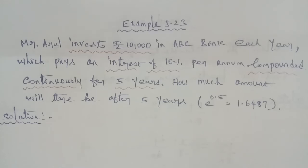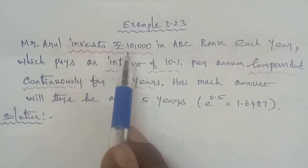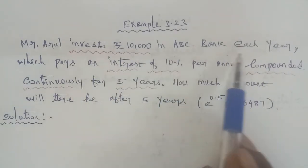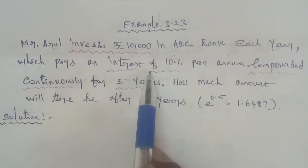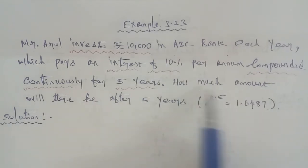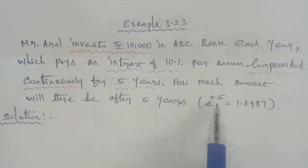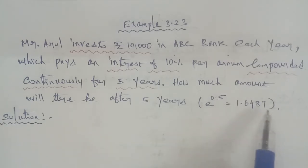Hi students, 12th business math, Example 3.23. Mr. Aroor invests Rs. 10,000 in ABC bank each year which pays an interest of 10% per annum compounded continuously for 5 years. How much amount will be there after 5 years? Given that e^0.5 value equals 1.6487.